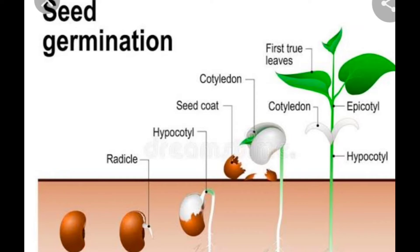Pores in the soil allow air to reach the seed. The roots come out first and grow downwards into the soil. Later, the shoot comes out and grows upwards towards sunlight. After using up the food stored in the cotyledons, the seedling gets water and nutrients from the soil. New leaves then prepare food for the plant.